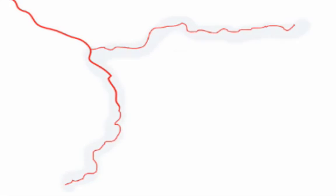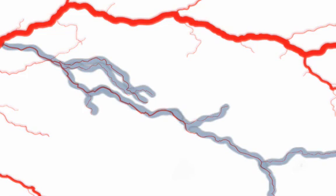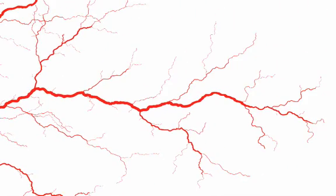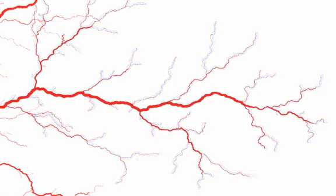If the blockage occurs in a capillary, only a small amount of tissue is affected, so you only have a small or mild amount of pain. If the blockage occurs in an arteriole, then a larger amount of tissue is affected, so you have greater pain. If the blockage occurs in an artery, then an even larger amount of tissue is affected, and you have extreme pain, which can also cause permanent damage to tissue and organs.